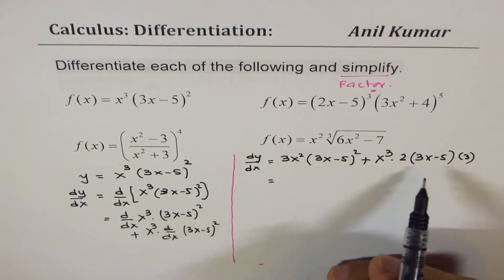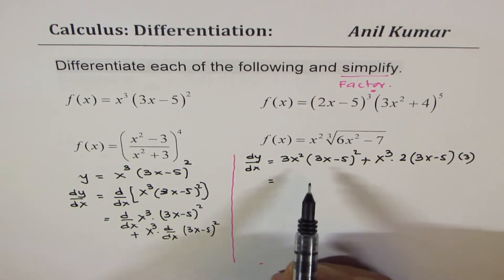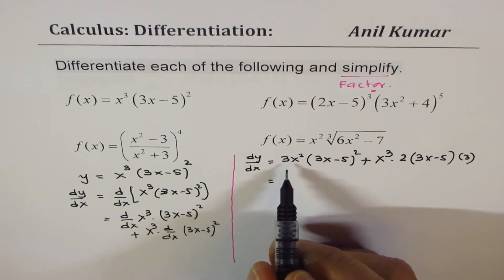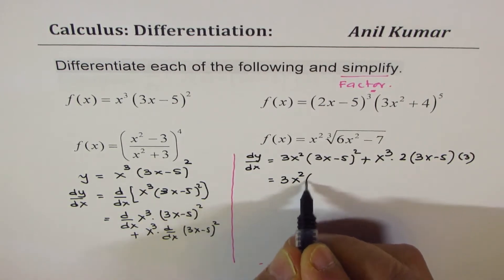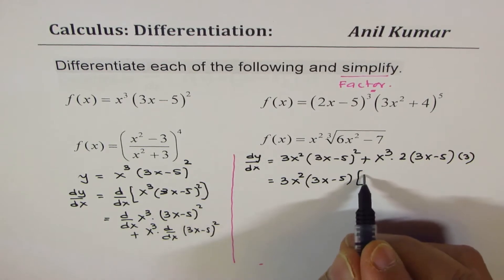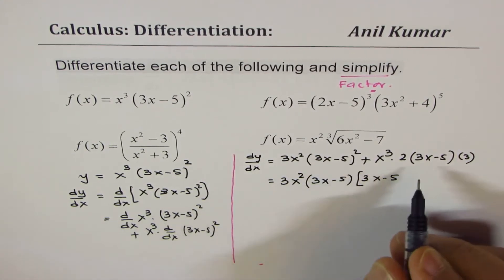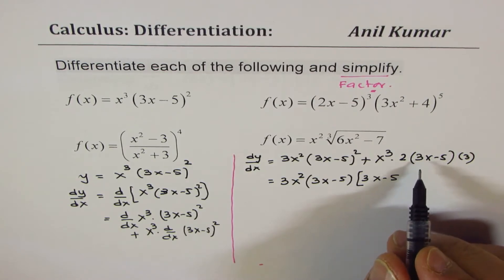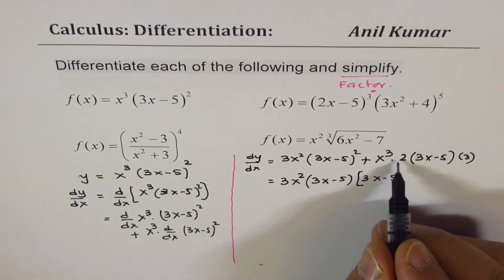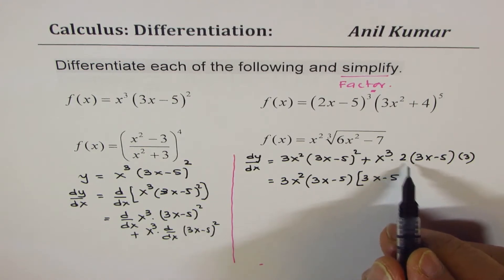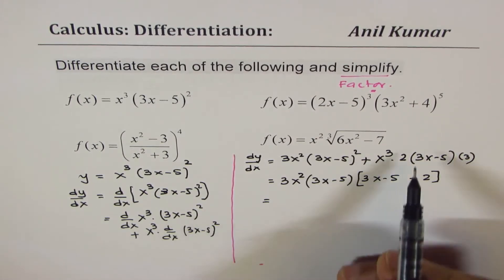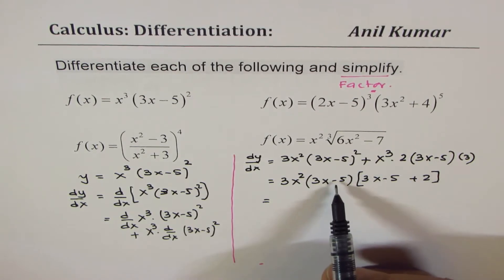So we'll apply chain rule here — we have 2 times 3x minus 5 times 3. Now when you get this kind of expression, you can actually factor at this stage. You'll find that since we applied the power rule, we have a factor common. So 3x squared is common, and this factor is also common with a power of 1. Once you factor it out, you're left with 3x minus 5 from the first term, and you get 2, because you have already taken 3x squared common.